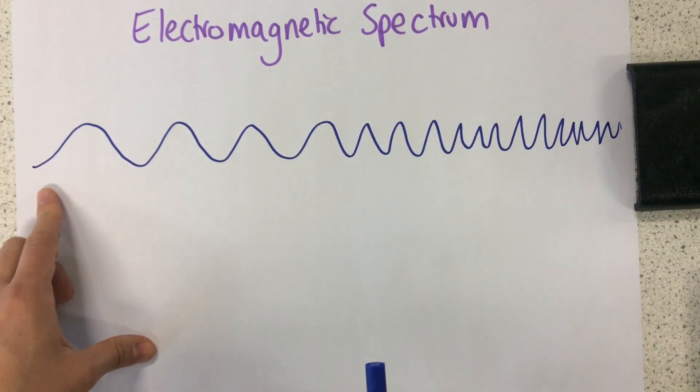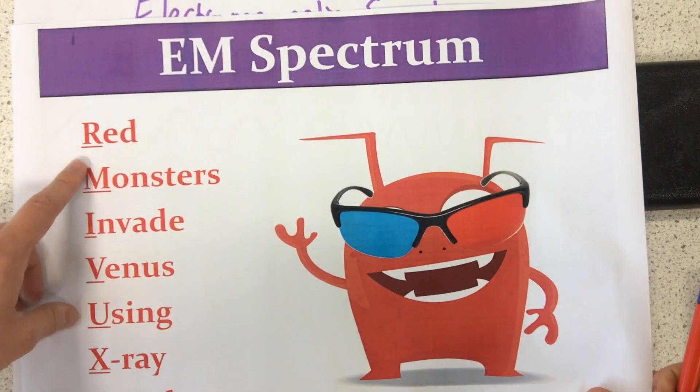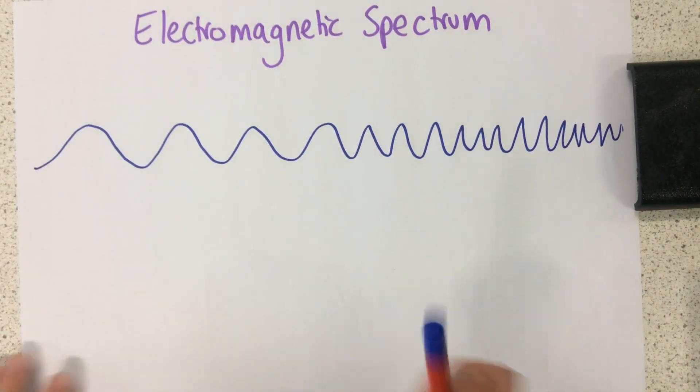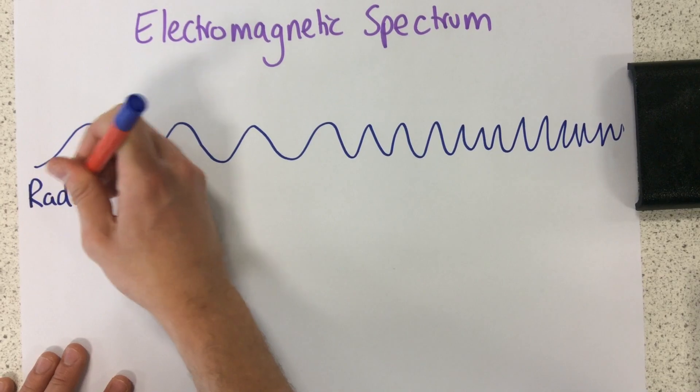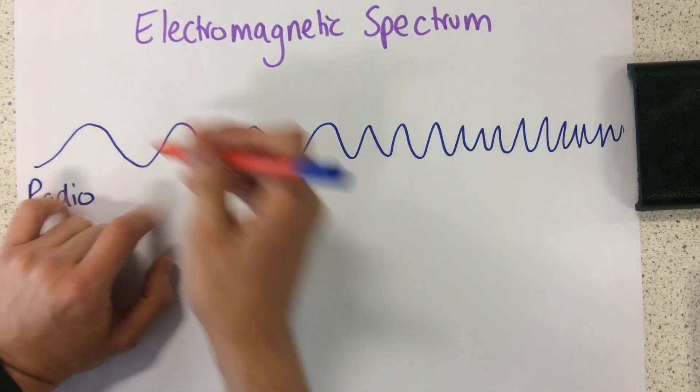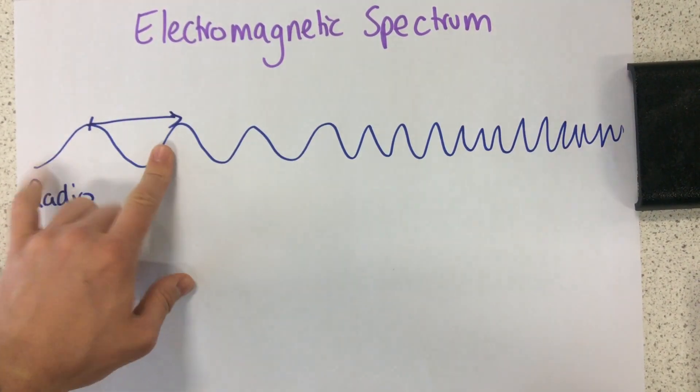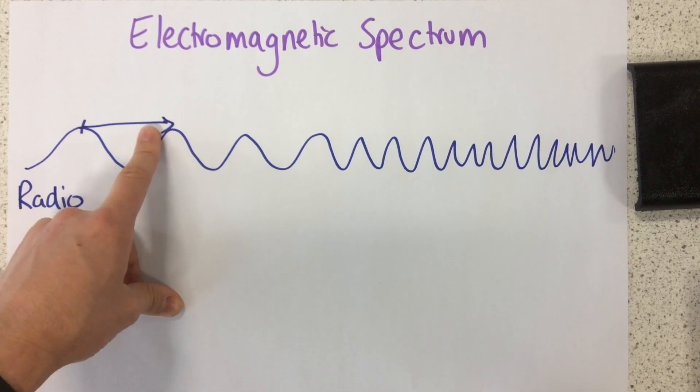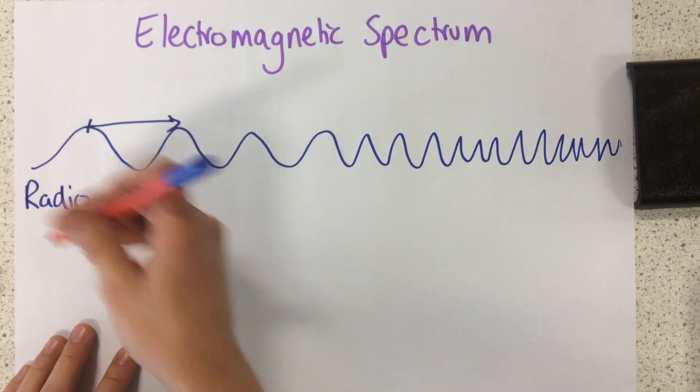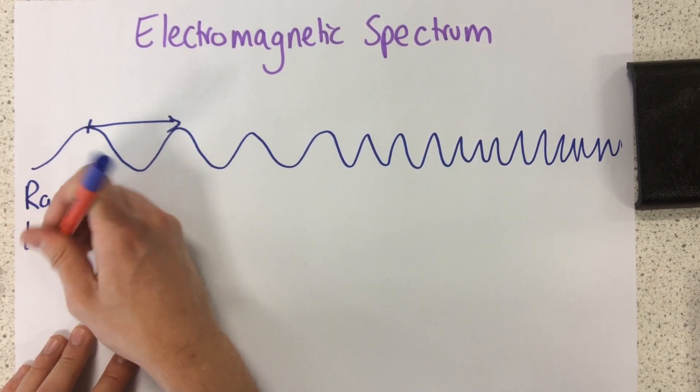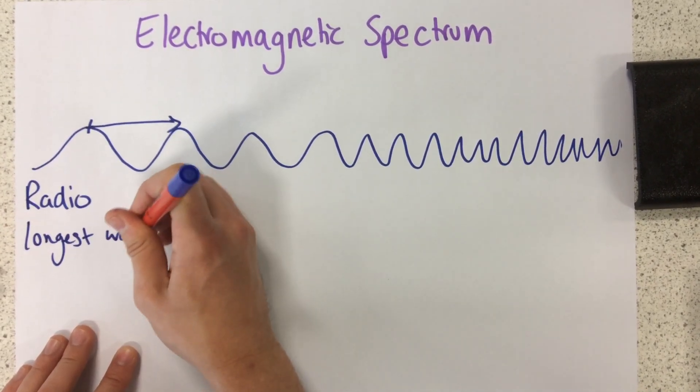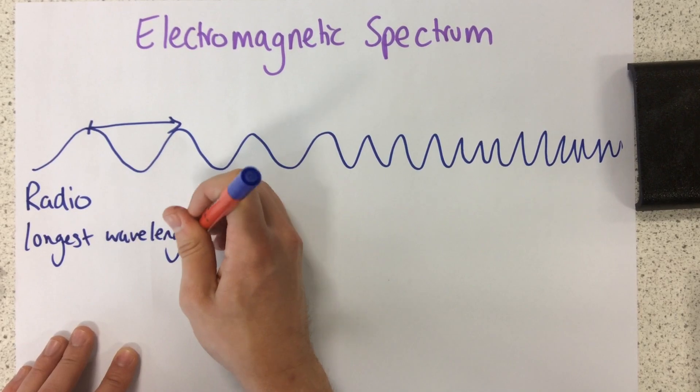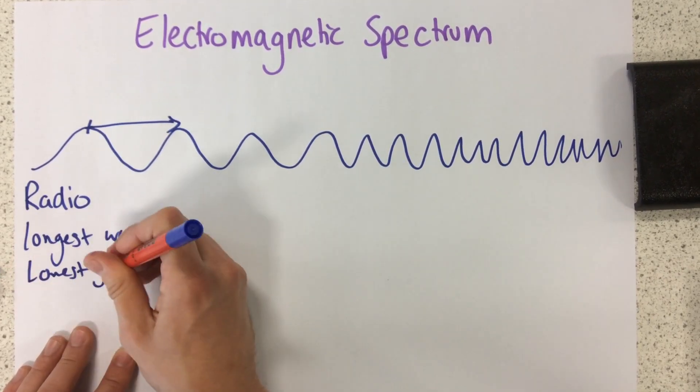At one end, remember red monsters, at one end we have radio waves. So, these ones have the longest wavelength. Remember, wavelength is just the distance between either two peaks or two troughs of a wave. So, it has the longest wavelength.